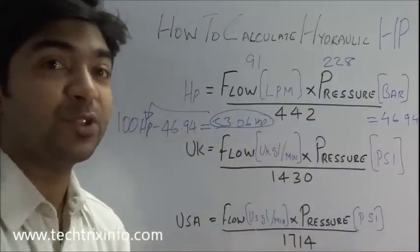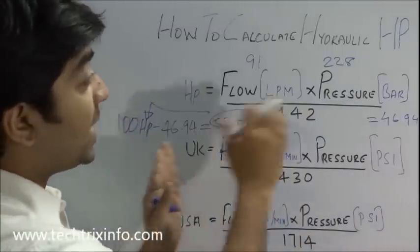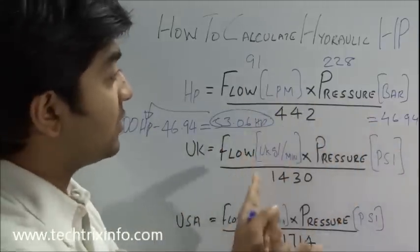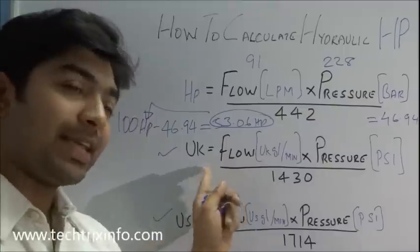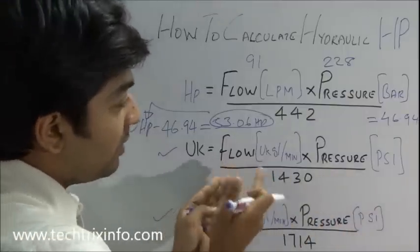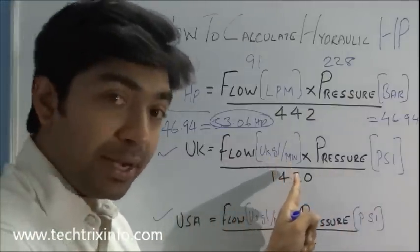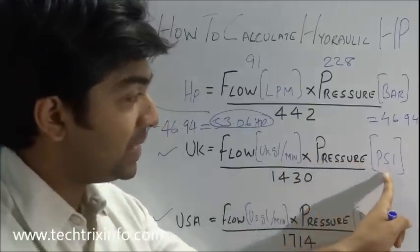So that's how the hydraulic HP is actually been calculated. And there are another two formulas. In UK normally the hydraulic HP is calculated with this formula: flow with the unit UK gallons per minute times pressure that is in PSI divided by a constant 1430.